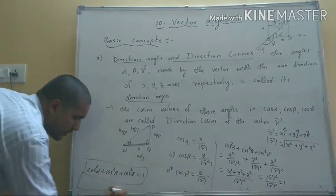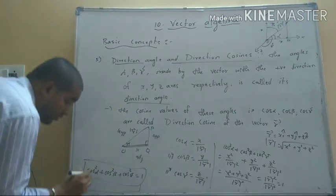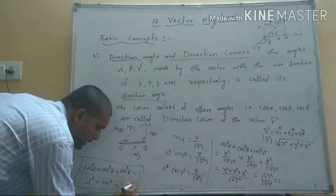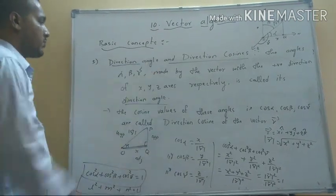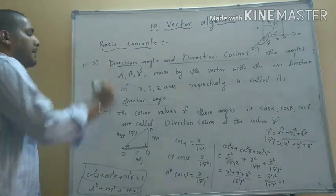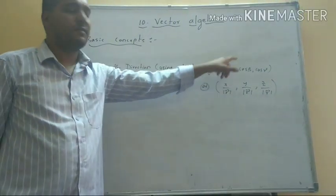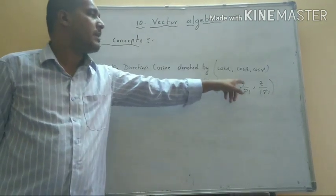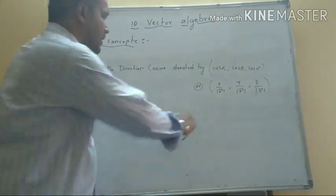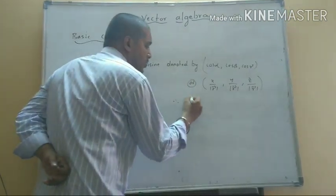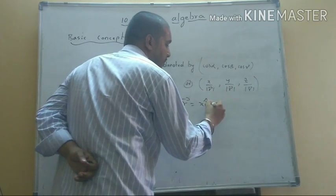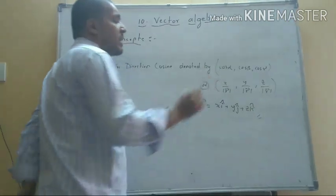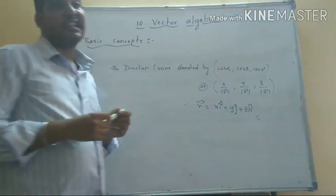And also the general formula: l² + m² + n² = 1. That is called the direction cosine formula — very, very important. Direction cosines are given by: cos alpha = x / |R|, cos beta = y / |R|, cos gamma = z / |R|, where R is the position vector x·î + y·ĵ + z·k̂. The direction cosines (l, m, n) satisfy l² + m² + n² = 1.